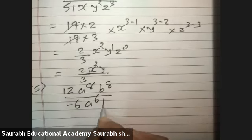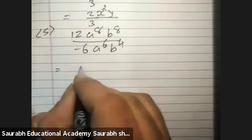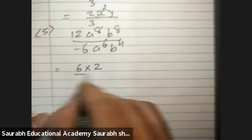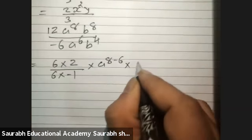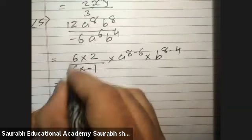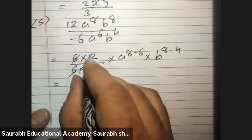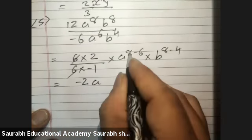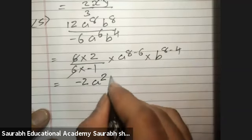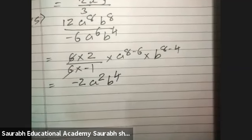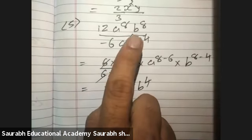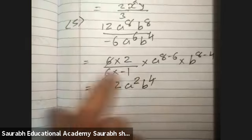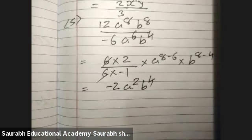Next: a raised to 6, b raised to 4, upon 12a raised to 8, b raised to 8. 12 means 6 times 2. Taking 6 and 6 cut, using the exponent rule: a raised to 8 minus 6 is a squared, b raised to 8 minus 4 is b raised to 4. So the answer is a squared b raised to 4. Either factorization or the exponent rule — both are valid methods. Now question number two.